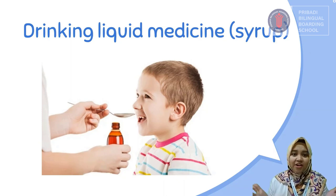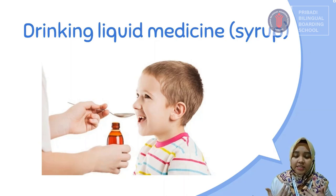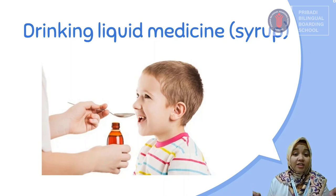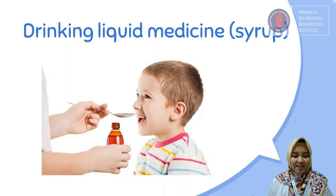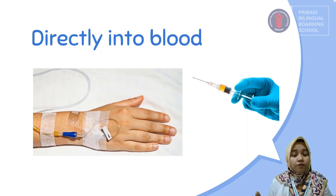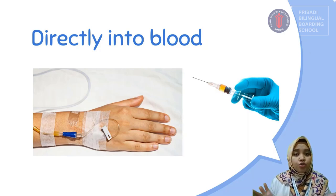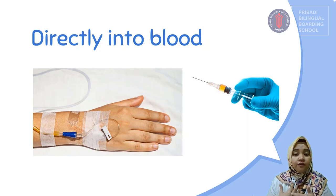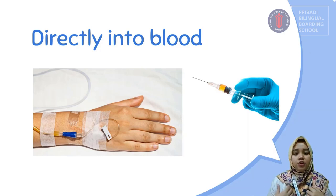The third type is syrup — I think everyone is familiar with this one. To take this medicine, you simply need to drink the liquid. Many of you have probably taken this kind of medicine. The last type is medicine that is directly injected into the blood. Usually if the patient is very sick and needs faster treatment, the doctor will give the medicine directly into the bloodstream so they can heal faster.